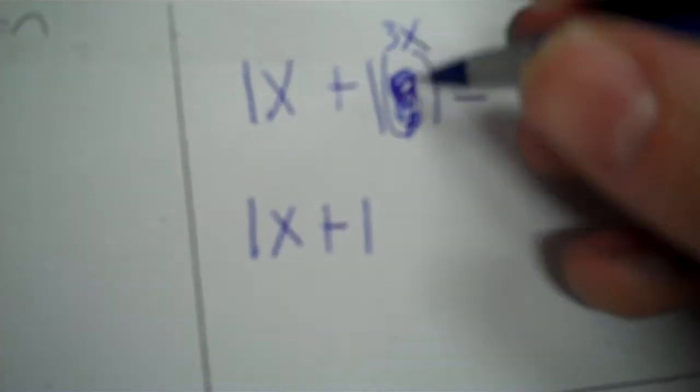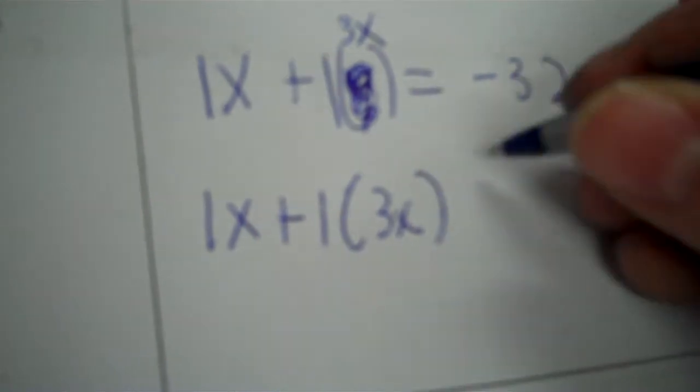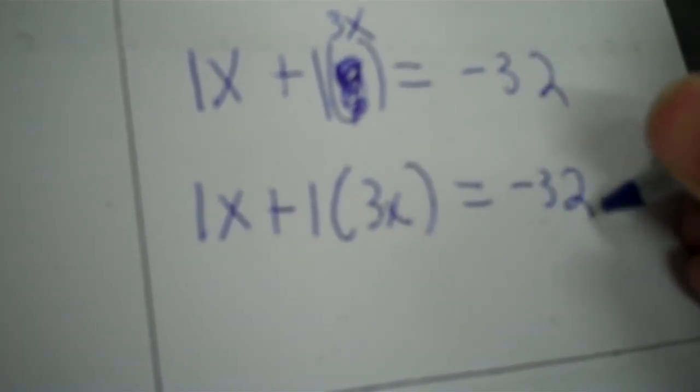Now, I'm going to say this three times. Whatever the base letter is, we're going to insert a parenthesis over it. Whatever the base letter is, it could be x, it could be y, in this case it's y, we insert a parenthesis. And then we scribble that out. And then we put 3x. Now, write the new equation out. You've got 1x plus 1, parenthesis 3x. And after the closed parenthesis, we're equal to negative 32.